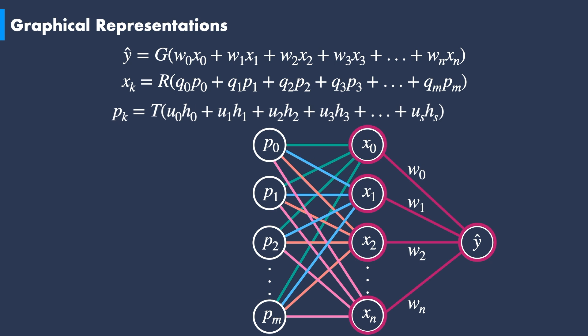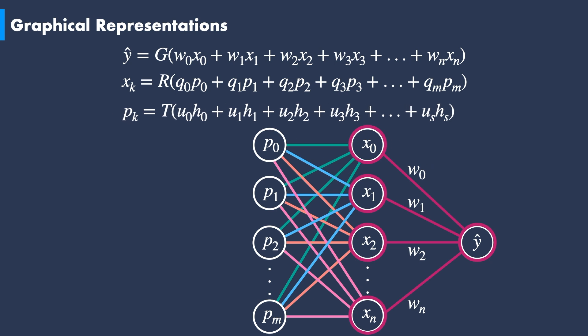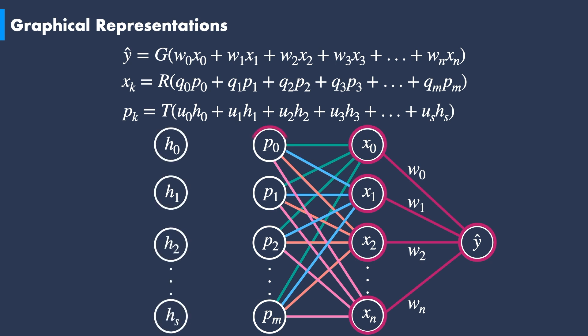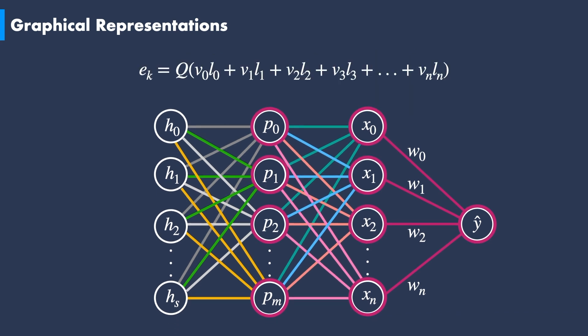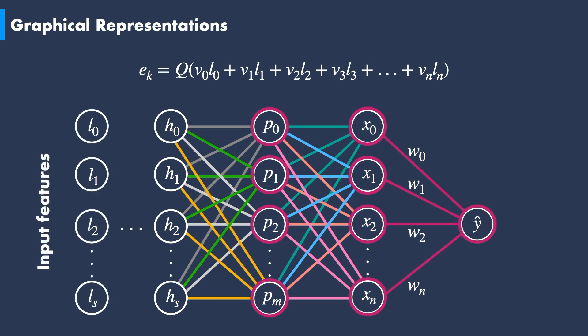Every pₖ term in its turn is a hypothesis expressed as a linear summation of h terms and an activation function t. Graphically, every p node is connected to h nodes through the weights u, with the linear summation and activation function applied using purple circles. This linear embedding process keeps going until we reach a hypothesis that is exclusively expressed with the input features lₖ and the corresponding weights vₖ.